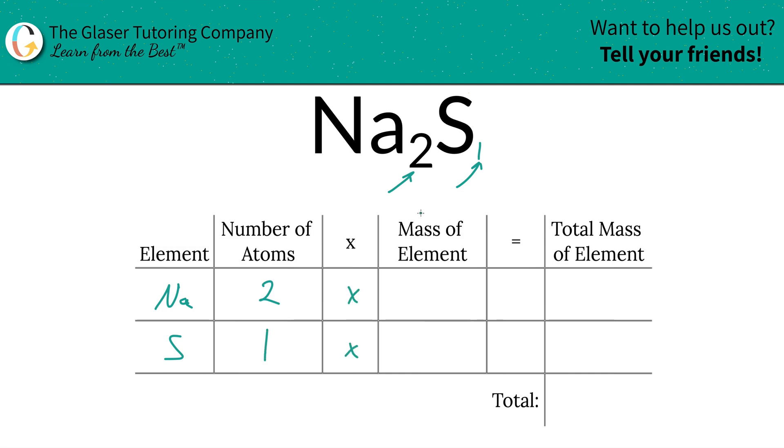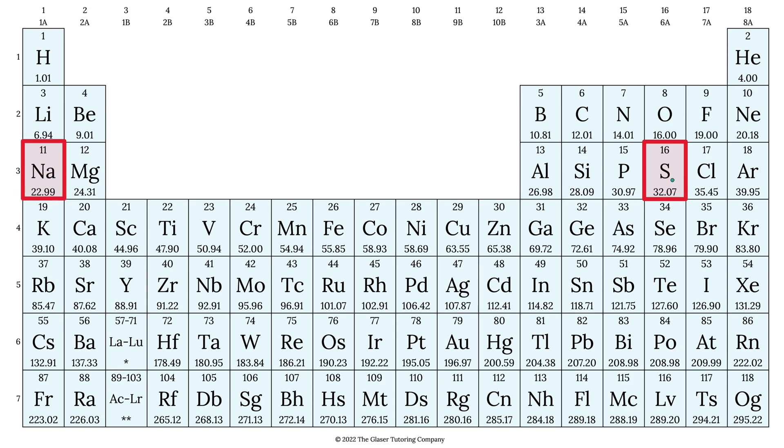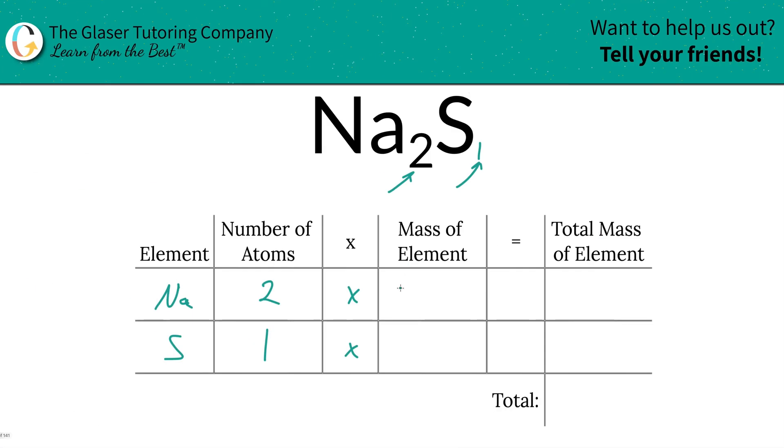We're going to take those number of atoms and multiply by the mass of each particular element. We need the periodic table for that. So sodium is 22.99, sulfur is 32.07. So that's what we're going to write down. 22.99 for sodium, 32.07 for sulfur.